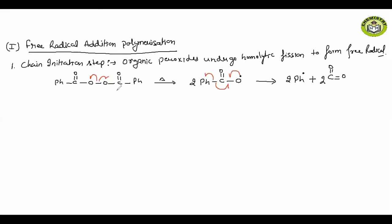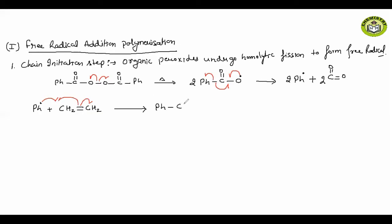Now the Ph radical reacts with CH2=CH2 (ethylene). The Ph radical attacks the double bond, the pi bond opens, and the electron shifts onto the terminal CH2. So we write Ph-CH2-CH2 radical. This completes the chain initiation step.